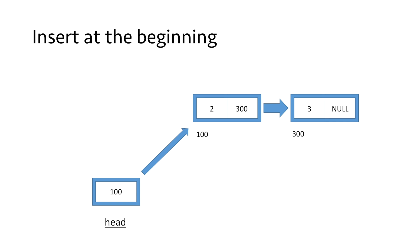Let's say we have a linked list with two nodes with values 2 and 3 respectively, and a head pointer pointing to the first node. We want to insert a new node with value 1 at the beginning of the linked list. So we create a new node using the new operator and return its address into the pointer ptr. Let's say the address is 200.